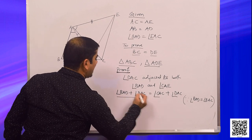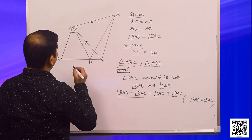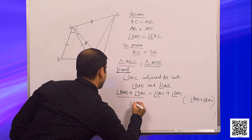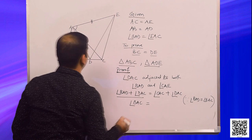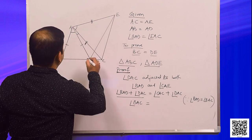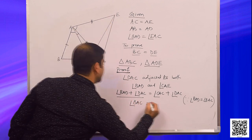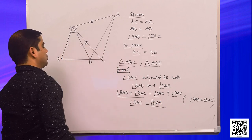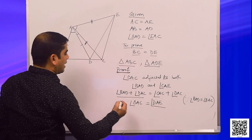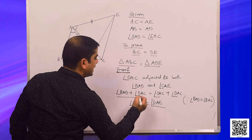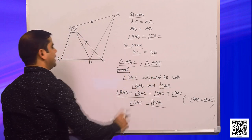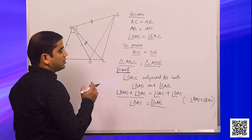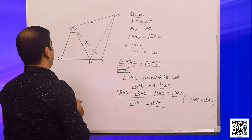So when we add these two angles, we get angle BAC. That means angle BAC is equal to angle DAE. Now we have proved that angle BAC is equal to angle DAE.